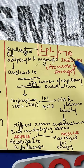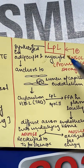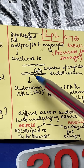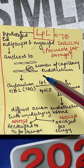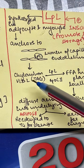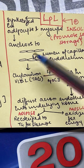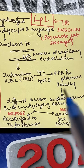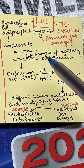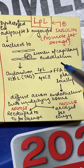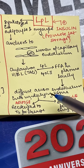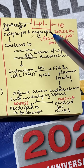Lipoprotein lipase is synthesized in adipocytes and myocytes. It is released into the surrounding where it anchors in the luminal part of the capillary endothelium. When chylomicrons and VLDL, which carry triglycerides, pass through the lumen of this capillary, lipoprotein lipase breaks them down to free fatty acids with the help of apolipoprotein C2.